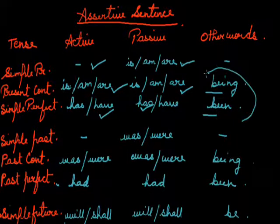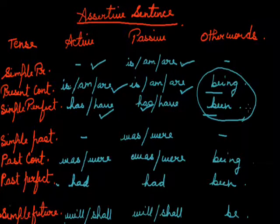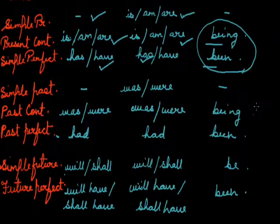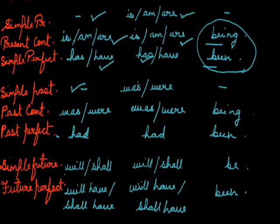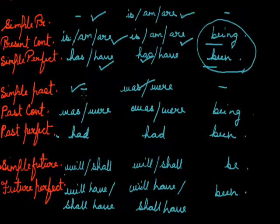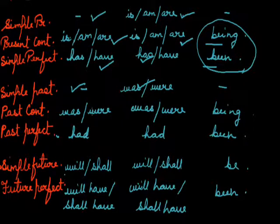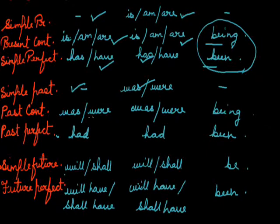Here we are taking the help of the other word. Simple past: 'she drank tea' and the passive of it will be 'tea was drunk by her.' Whenever we use a helping verb, it takes the third form of the verb.